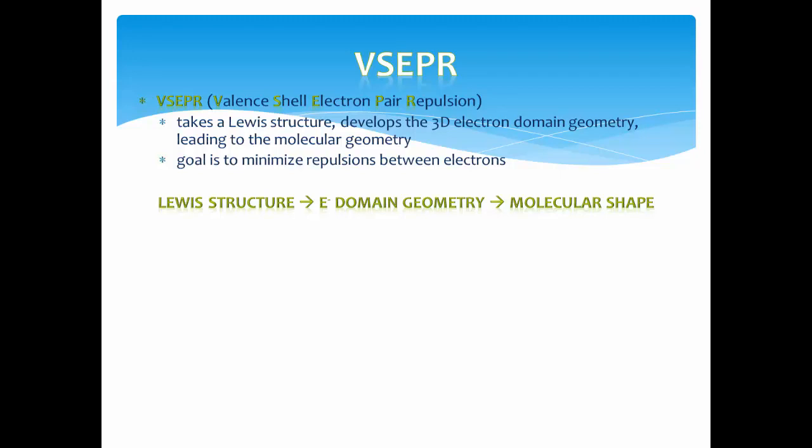Therefore, using VSEPR, you can take the Lewis structure of a molecule, find the electron domain geometry, and then get the molecular shape.